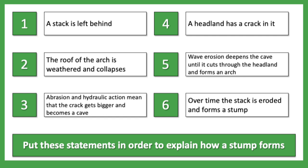In four and six mark answers, you need to make sure you're not just writing the term 'erosion' — you need to be specific about what process is actually happening. We have the following statements: a stack is left behind; the roof of the arch is weathered and collapses; abrasion and hydraulic action means a crack gets bigger and becomes a cave; a headland has a crack in it; wave erosion deepens the cave until it cuts through the headland and forms an arch; and over time the stack is eroded and forms a stump. Pause the video if you need more time to note down the order.